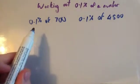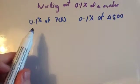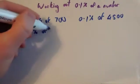To get 0.1% of a number, what you do is you first of all get 1% and then you divide by 10. So first of all, let's get 1% of 700.